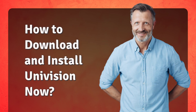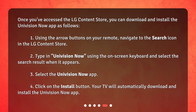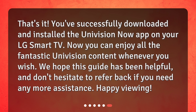How to download and install Univision Now? Once you've accessed the LG Content Store, you can download and install the Univision Now app as follows: 1. Using the arrow buttons on your remote, navigate to the search icon in the LG Content Store. 2. Type in Univision Now using the on-screen keyboard and select the search result when it appears. 3. Select the Univision Now app. 4. Click on the Install button. Your TV will automatically download and install the Univision Now app. That's it! You've successfully downloaded and installed the Univision Now app on your LG Smart TV. Now you can enjoy all the fantastic Univision content whenever you wish.